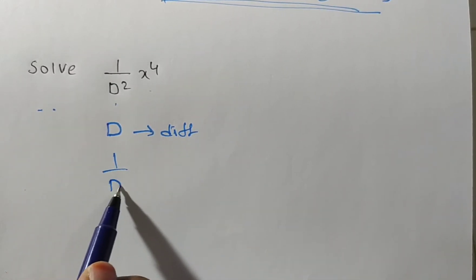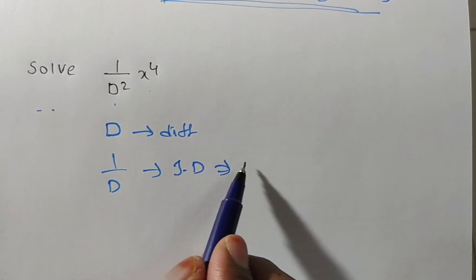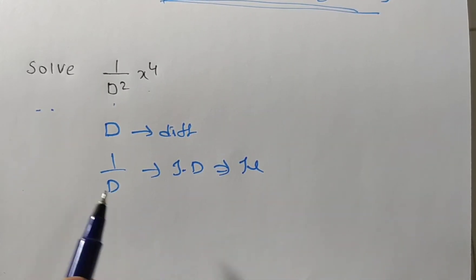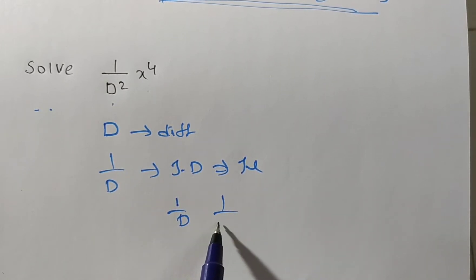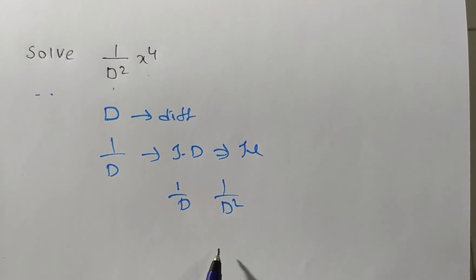1 by D is called the inverse differential operator, nothing but integration. So if 1 by D is there, we have to integrate one time. Then 1 by D squared means we have to integrate two times.